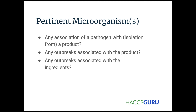When evaluating pertinent microorganisms, you ask: is there any association of a pathogen with this product? This means evaluating hazards — any outbreaks associated with the product you're producing, or with the ingredients used to make it. Think about the COAs: if I have an ingredient known for Salmonella issues, then as part of my Certificate of Analysis and supplier program, I need to address that.